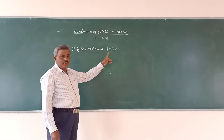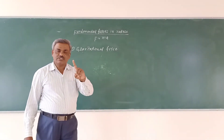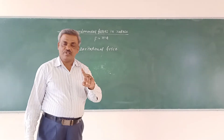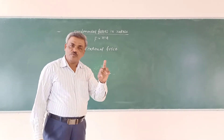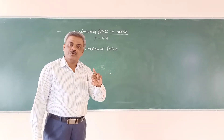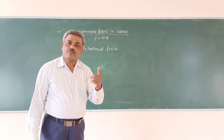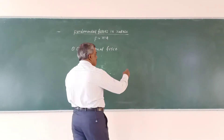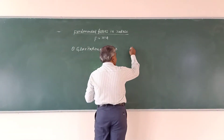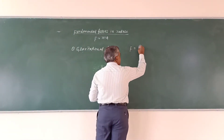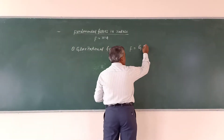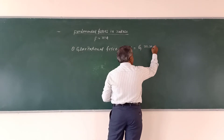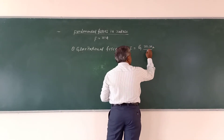Gravitational force — the force of attraction between any two bodies due to their masses. The mathematical formula: F equal to G times M1 times M2 divided by D square.